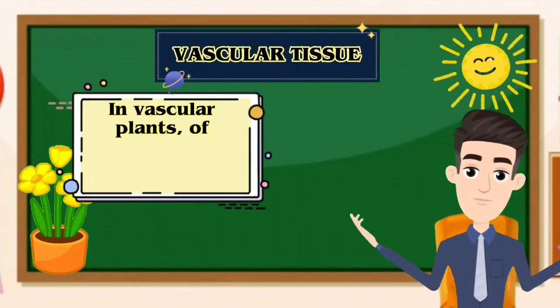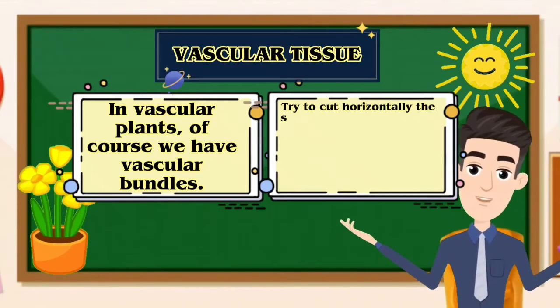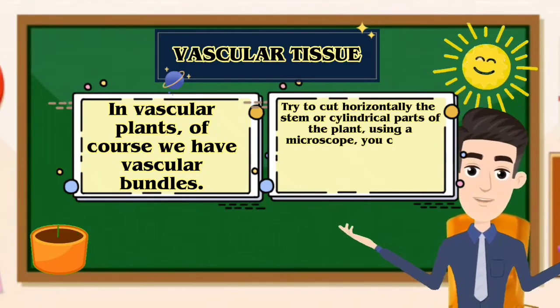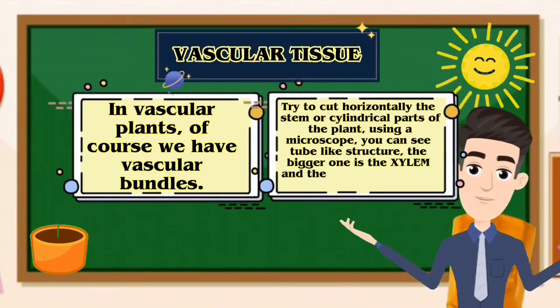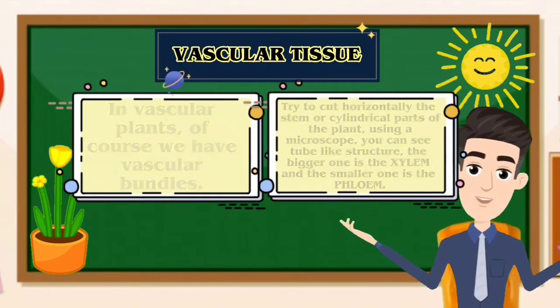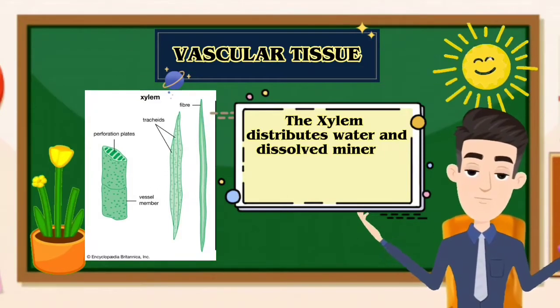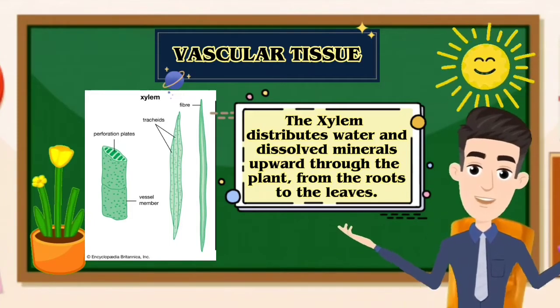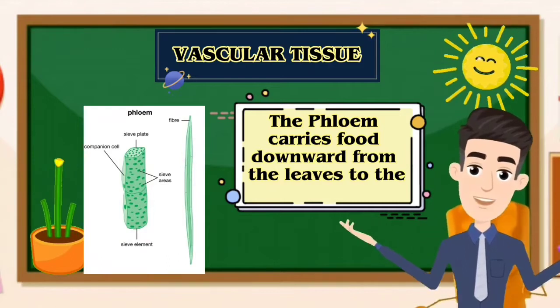In vascular plants, of course we have the vascular bundles. Try to cut horizontally the stem or cylindrical parts of the plant. Using a microscope, you can see tube-like structures. The bigger one is the xylem and the smaller one is the phloem. The xylem distributes water and dissolved minerals upward through the plants from the roots to the leaves. The phloem carries food downward from the leaves to the roots.